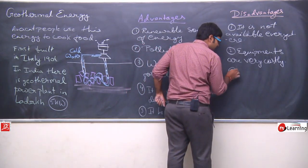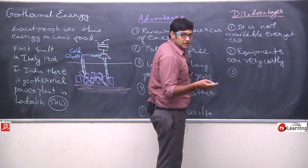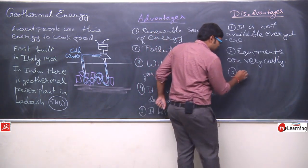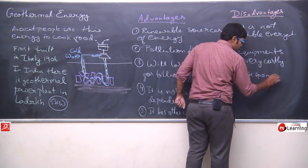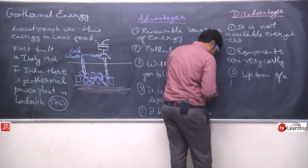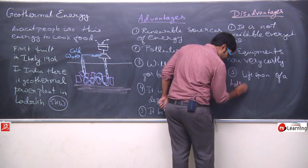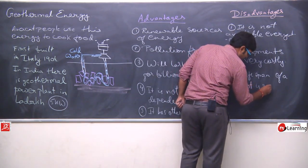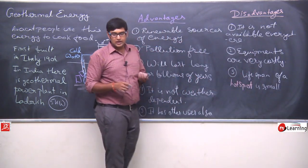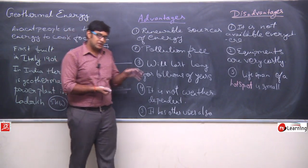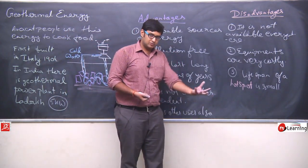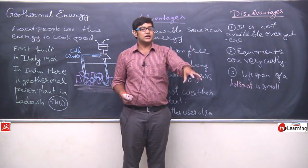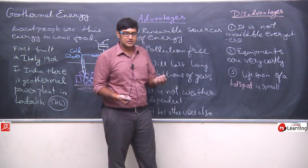Third problem: as we saw earlier, the hole we drilled may have a limited lifespan, so the lifespan of a hot spot is small. A hot spot is the position on the earth's surface from which steam is visibly coming out — that is called a hot spot because it has hotness inside. In Iceland you will see hot spots everywhere, steam coming out from many places. Similarly in India, approximately 350 hot spots have been identified.